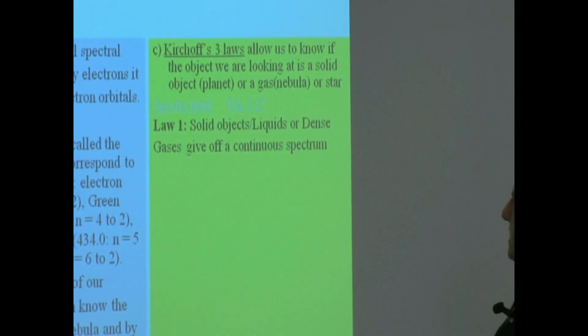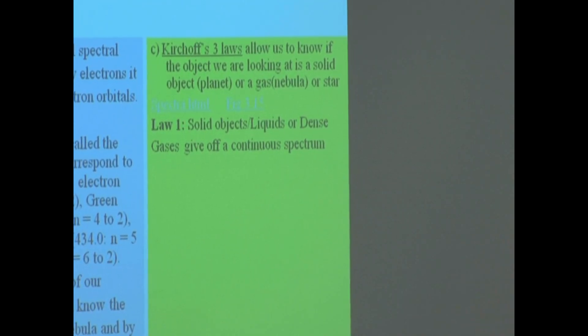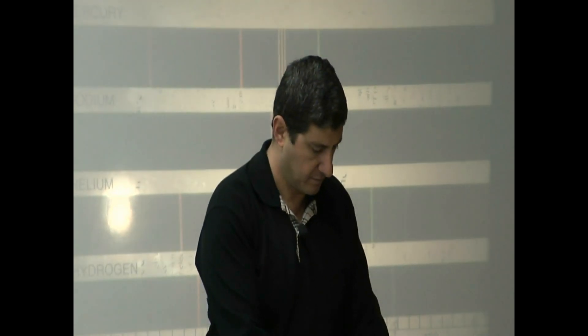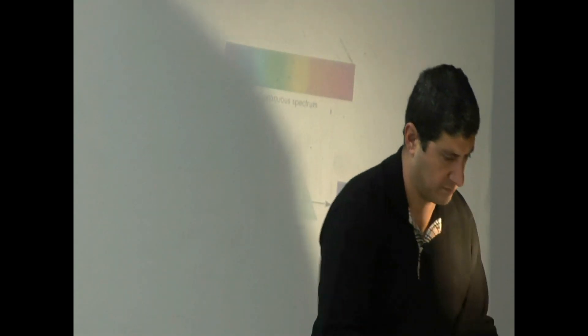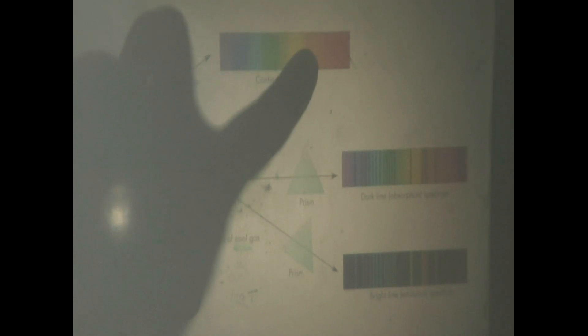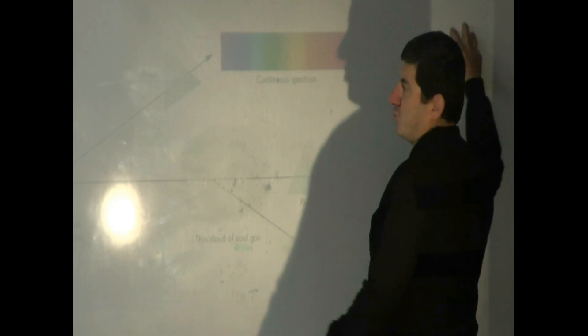So, law number one says solid objects, liquids, or dense gases give off continuous spectra. Continuous spectra is this one. A hot solid, liquid, or dense gas - if it's very hot and you take its light through a prism, you're going to get a continuous spectra. That means you're going to have no absorption lines, no emission lines, just a continuous spectra.